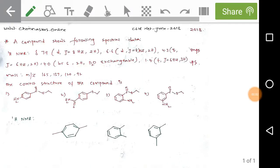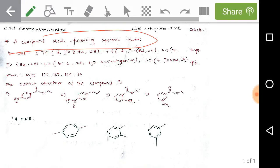Hi, now we are analyzing the problem of CSIR-NET at June 2018 Chemical Sciences. Just observe the given problem — a compound shows the following spectral data.